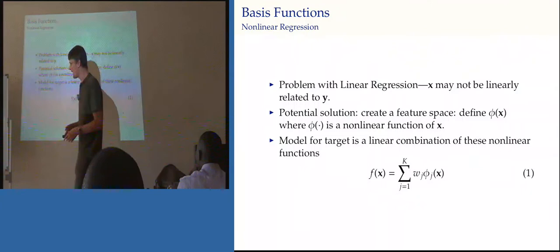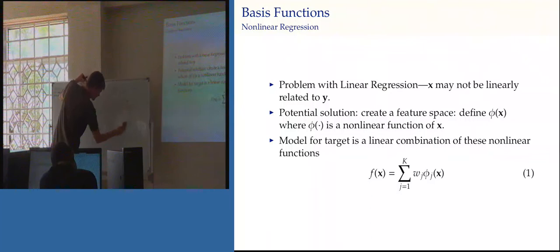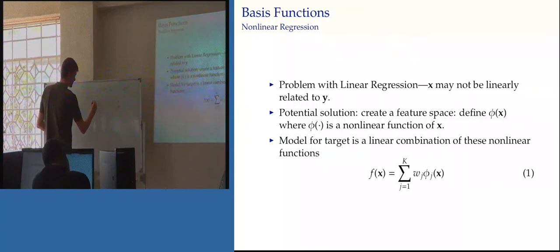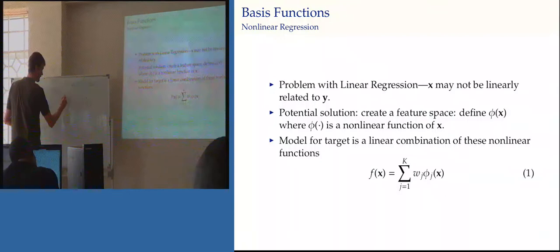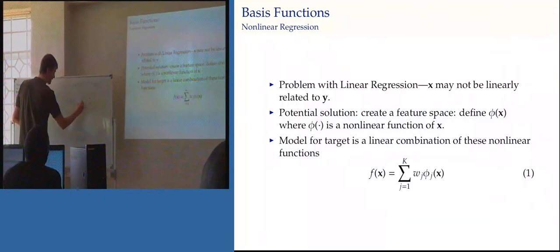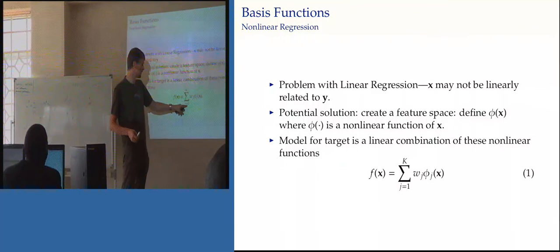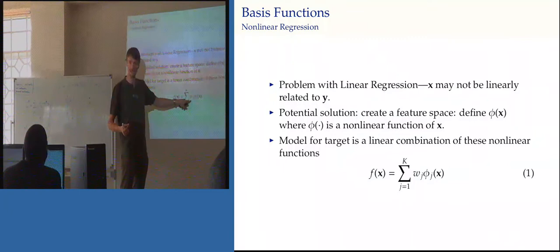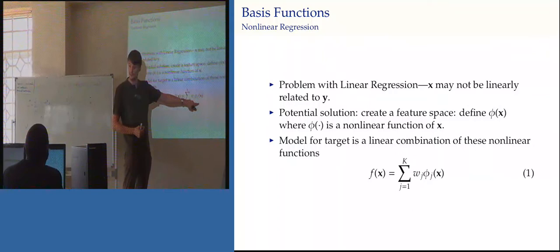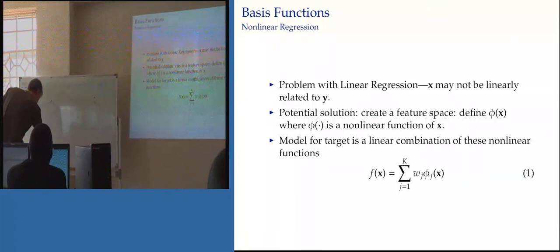In the previous model, there were two basis functions. Phi_1 of x equals x, and phi_2 of x equals 1 — a constant function in x. So F of x was phi_1 of x times w_1, where w_1 was m, plus phi_2 of x times w_2, where w_2 was c. The linear model is a special case of this more general model with these particular definitions for the basis functions — they were very uninteresting basis functions.